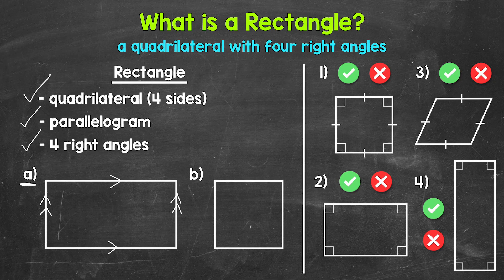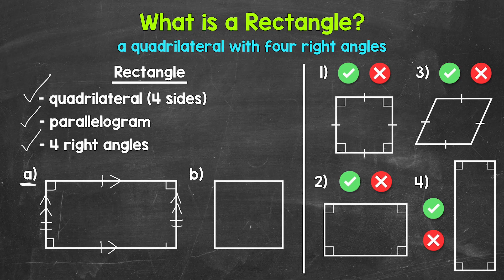Opposite sides of a parallelogram, and therefore rectangles, are equal in length — we can use tick marks to show that. One tick mark on each of those sides shows they are the same length, and two tick marks on the other pair shows they are equal in length. And then all four angles are 90 degrees. That's an example of a rectangle.